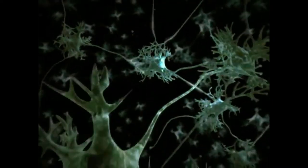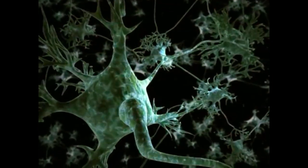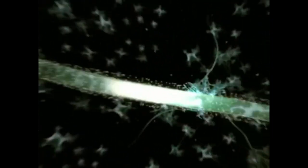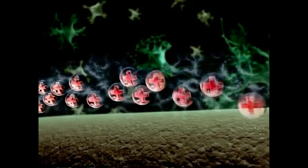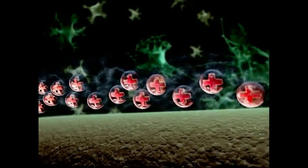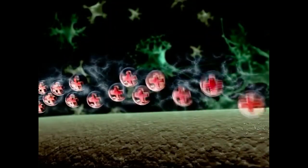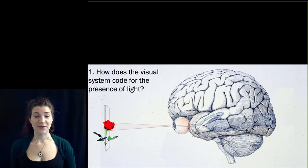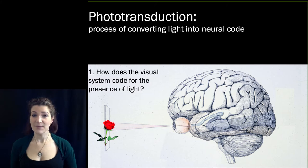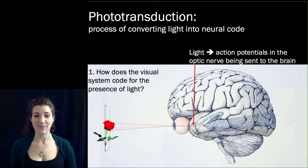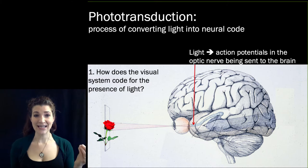Let's watch this in action. Here you can see individual neurons — the light represents action potentials, caused by those positively charged ions being pulled into the cell temporarily and then exiting it again. The first challenge is how the visual system codes for the presence of light. The process of converting light into neural code is called phototransduction — somehow light goes in and action potentials come out the back of the retina and are sent up to the brain.